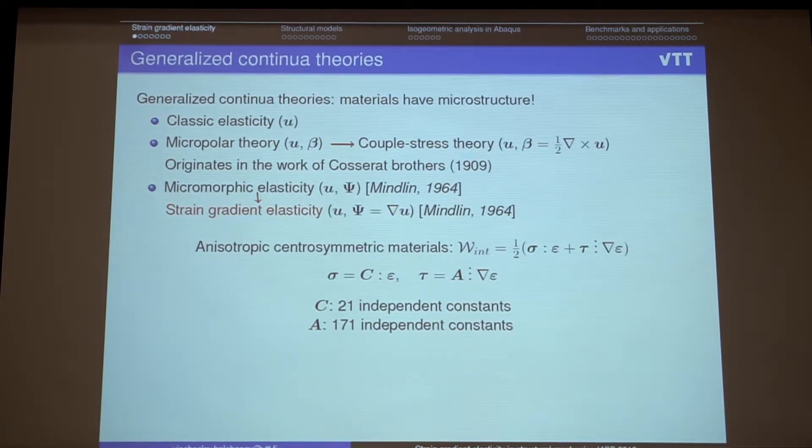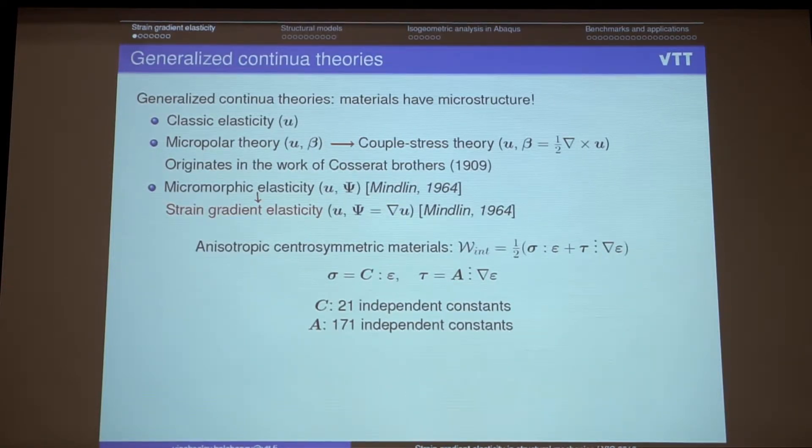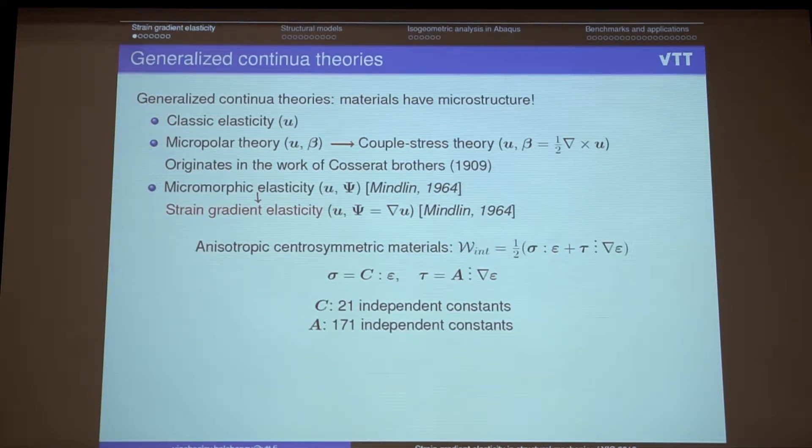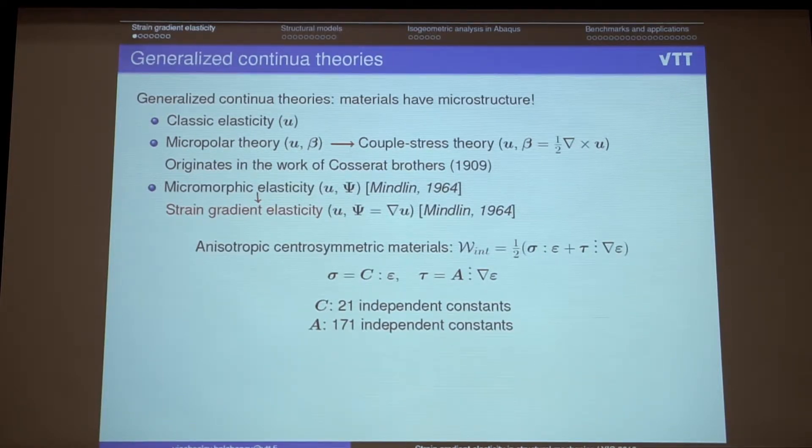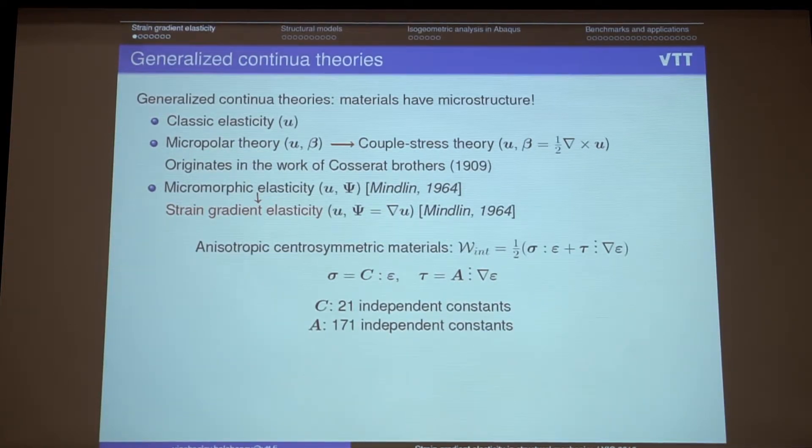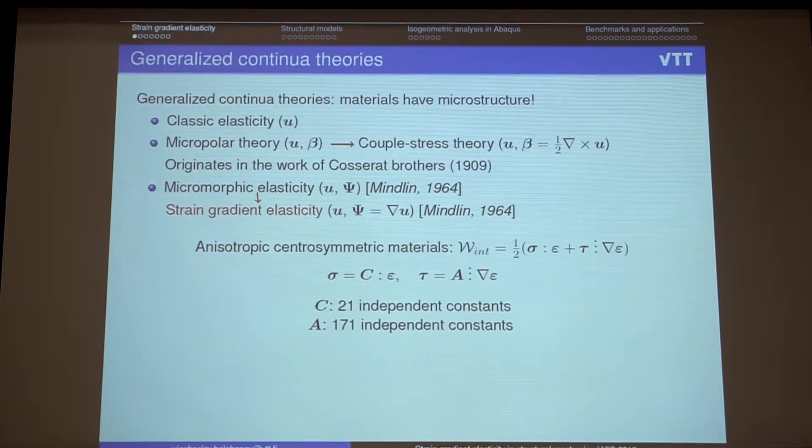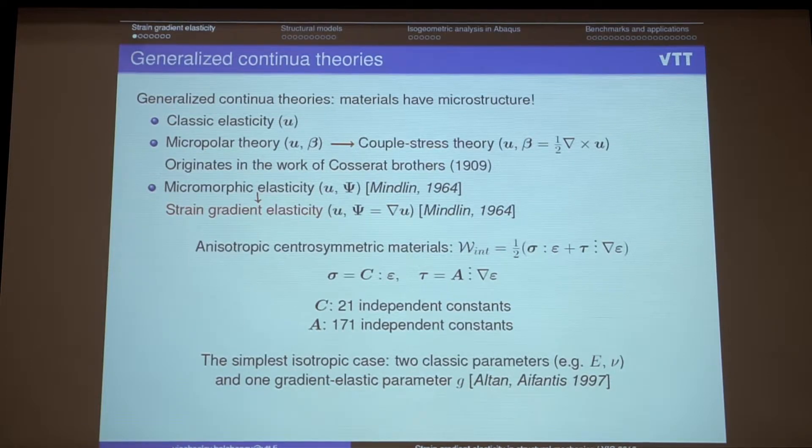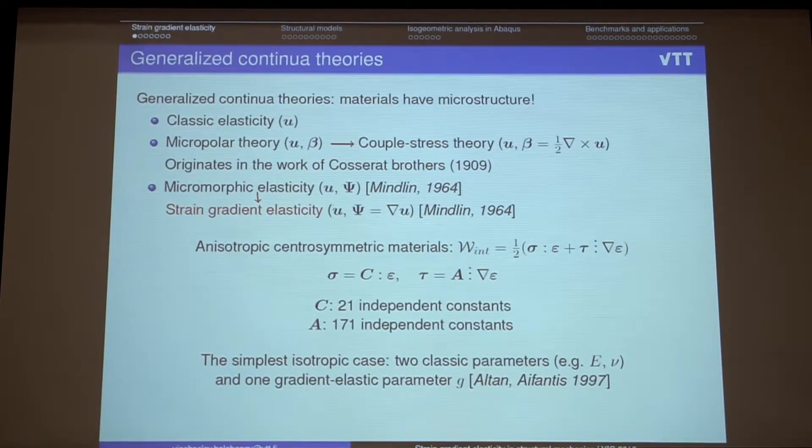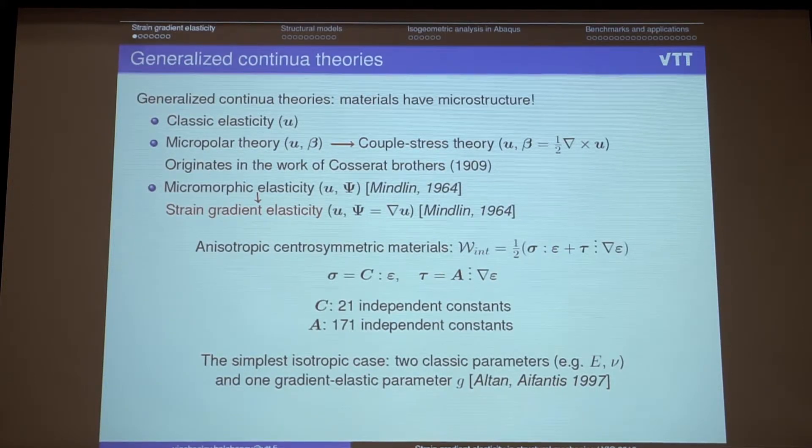And this is this additional term which relates to the couple stress and its work conjugate gradient of strains. But the problem is that this theory demands to define 171 new independent constants for the material, which is a very difficult problem. Of course, there are some simplifications of this theory, one of them was developed around 20 years ago, and it implies that there is only one additional gradient elastic parameter G in the simplest isotropic case.